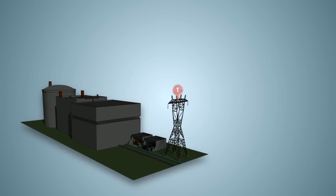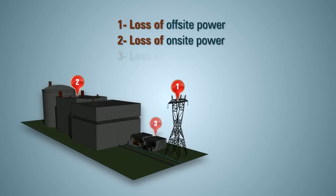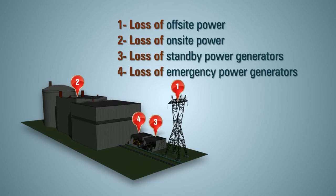A total station blackout means there are no longer any power sources available to the station. It's important to note that this type of accident would take several days to develop and is extremely unlikely given the safety systems in place.